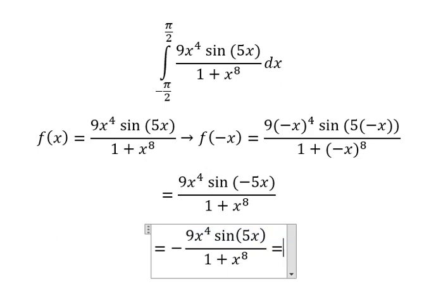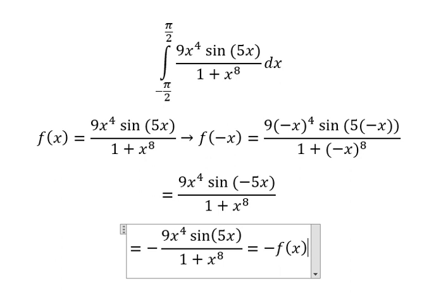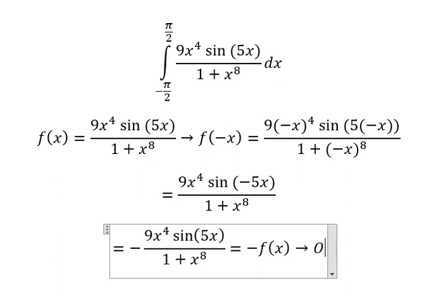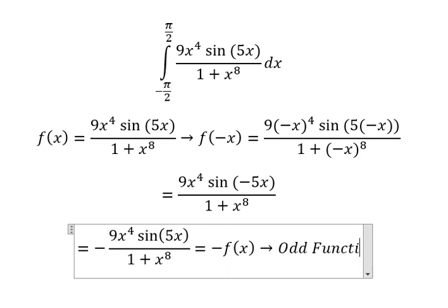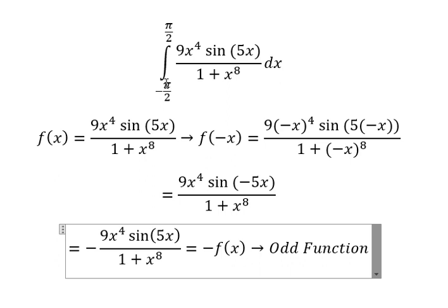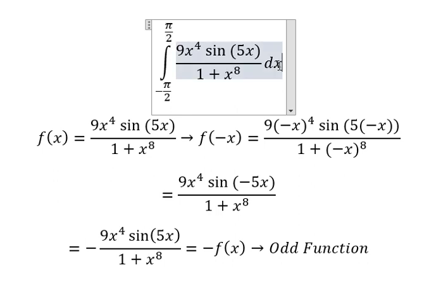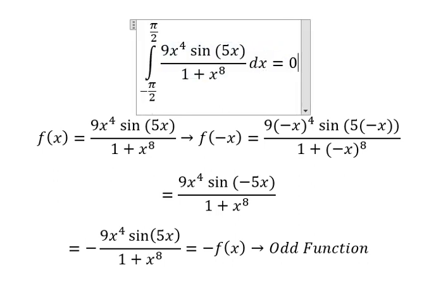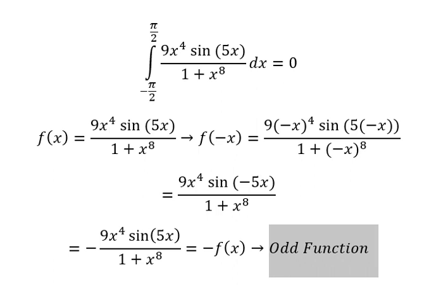And we see that this is equal to negative f of x, so this is about an odd function. And we see that the bound is symmetric from negative π over 2 to positive π over 2, so this one equals to zero. This is the end, thank you for watching.